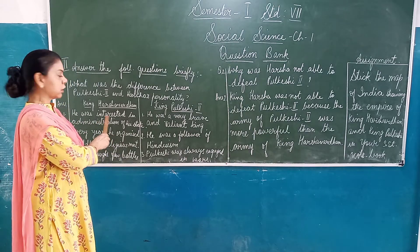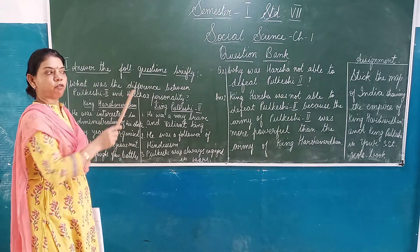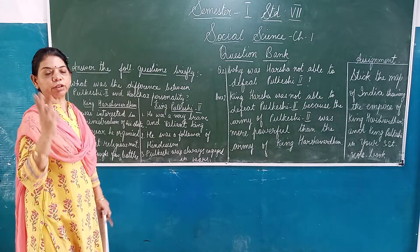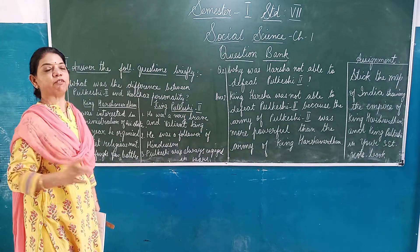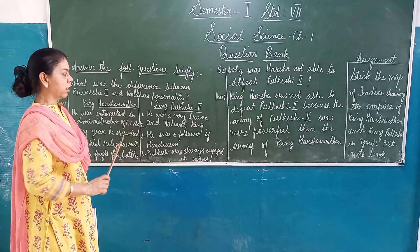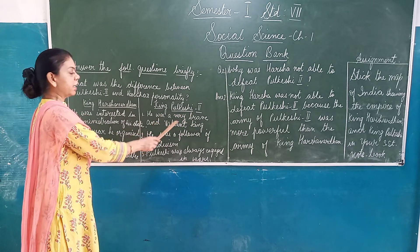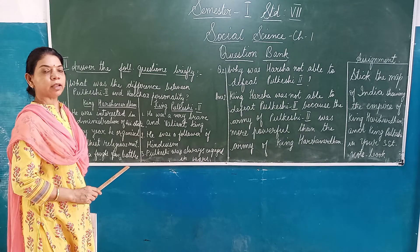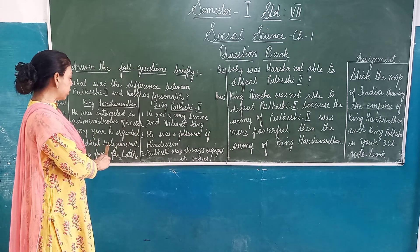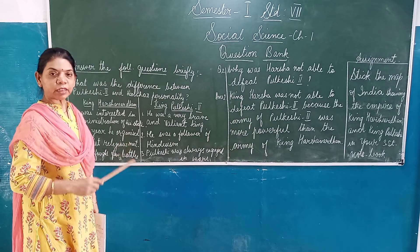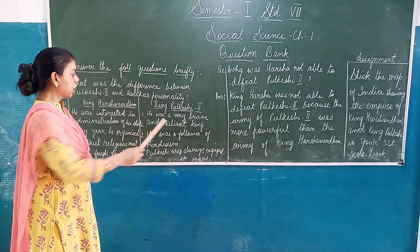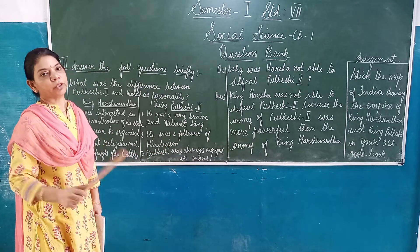The first point of difference: King Harsha was interested in the administration of his state. He had divided his daily routine activities into three parts — administration, religious, and welfare activities. Whereas Pulakeshi 2 was a very brave and valiant king. The second point of difference: every year King Harsha organized a Buddhist religious meet, and during his time Buddhism gained momentum. Whereas King Pulakeshi 2 was a follower of Hinduism.